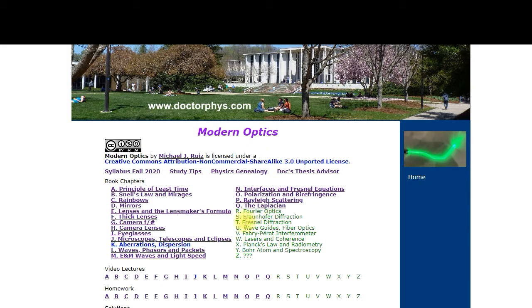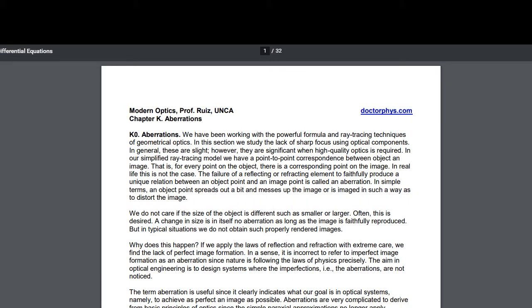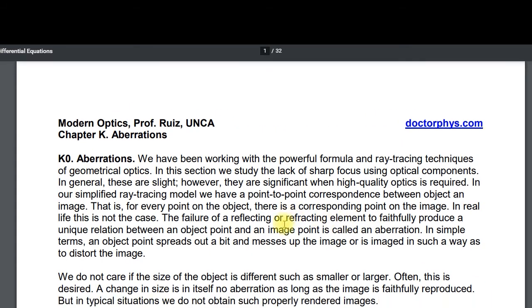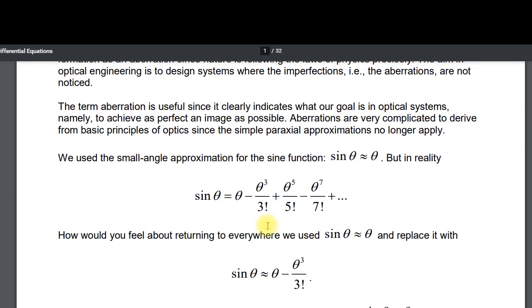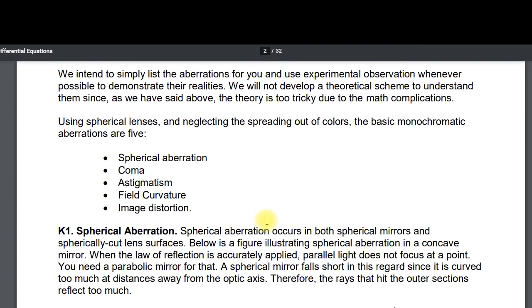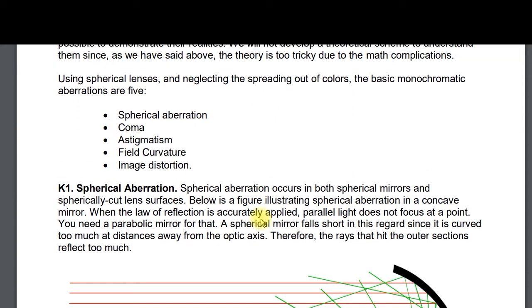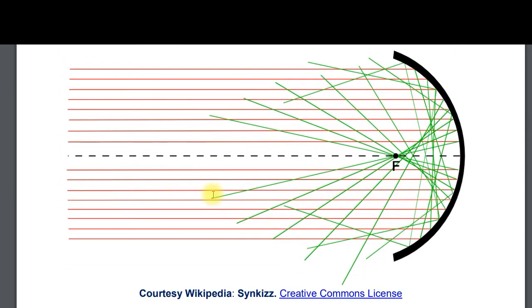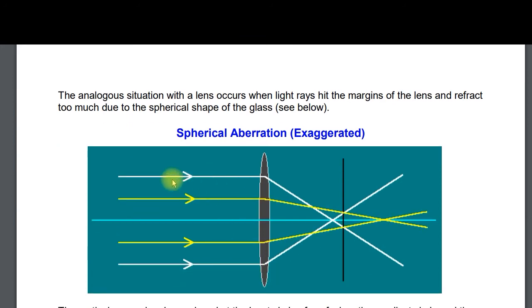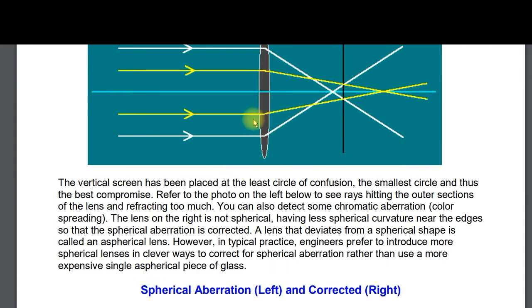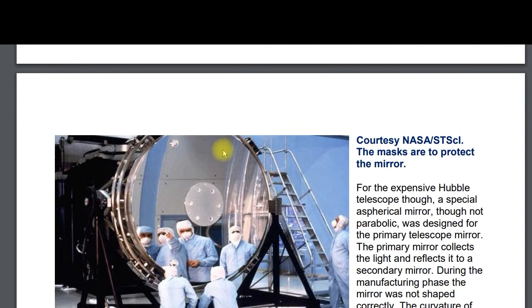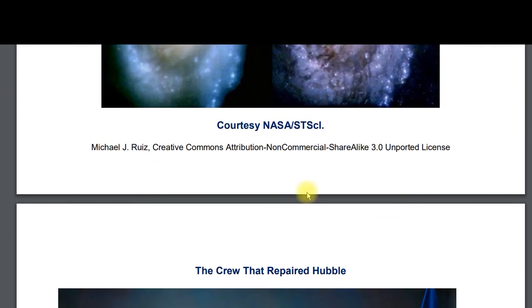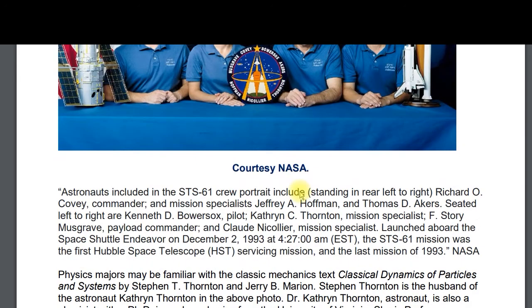Now we go to the aberrations. Aberrations is kind of a break from heavy mathematical detail because a lot of this is conceptual. Know how to expand sine and cosine, but these are conceptual topics. Spherical aberration, coma — know a one-liner for each. For spherical aberration: marginal rays bend too much. That's because it's a spherical cut, which is cheaper to do.